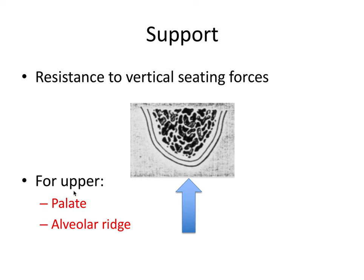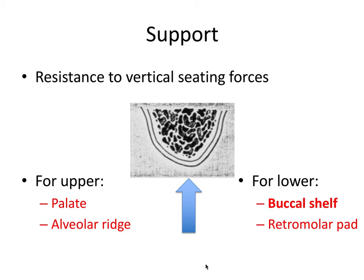For the upper arch, the structures that will provide the most support are the palate and the alveolar ridge — these are the structures most resistant to resorption and hence provide the most support. For the lower arch, it will be primarily the buccal shelf that provides support, and the retromolar pad area will also provide some support. From the denture point of view, the denture base is what provides support — that's the part of the denture intimately contacting the soft and hard tissues of the dental arch.